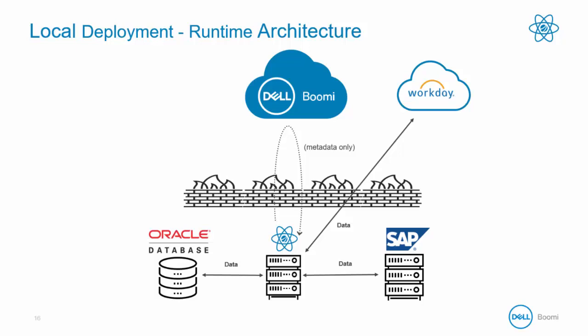The data never goes to the Boomi platform or cloud. It's processed in the local runtime, and only metadata about the execution — such as how many documents were run through, how long it took, or any error messages — gets communicated back to the platform so it can display in process reporting. All documents and data stay with the runtime.